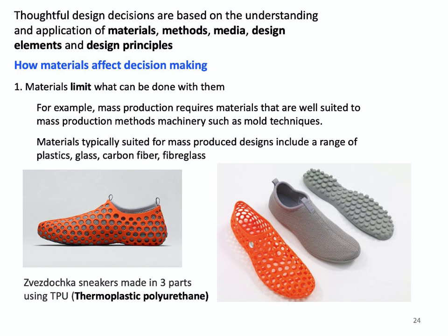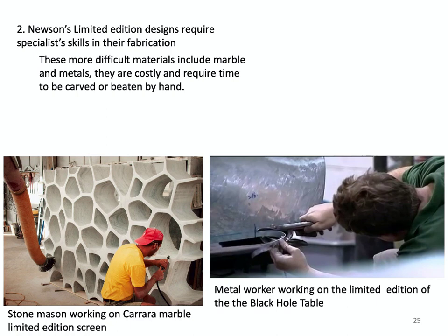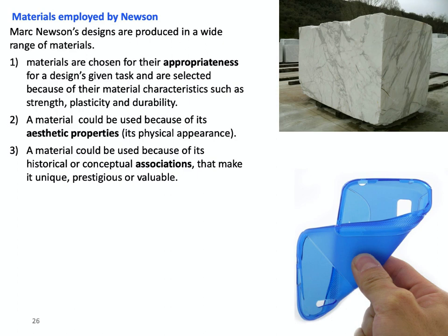Secondly, Newson's limited edition designs require specialist skills in their fabrication. These more difficult materials include marble and metals, which are costly and require time to be carved or beaten by hand. The materials chosen by Mark Newson for his designs are selected on the basis of three important criteria. Appropriateness: materials are chosen for their appropriateness for a design's given task and are selected because of their material characteristics, such as strength, plasticity and durability. Aesthetic properties: a material could be used because of its aesthetic properties, that is, its physical appearance. Associations: a material could be used because of its historical or conceptual associations that make it unique, prestigious or valuable.